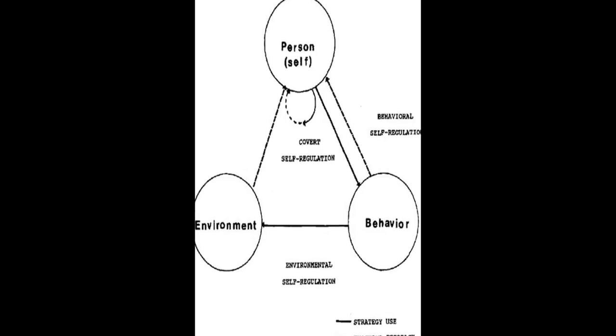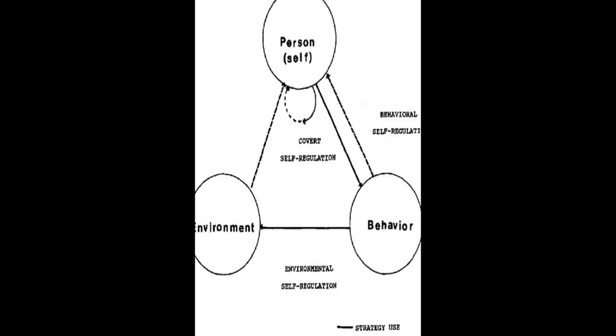The models are then compared in terms of phases and subprocesses, how they conceptualize metacognition, motivation, and emotion, top-down/bottom-up, automaticity, and context.